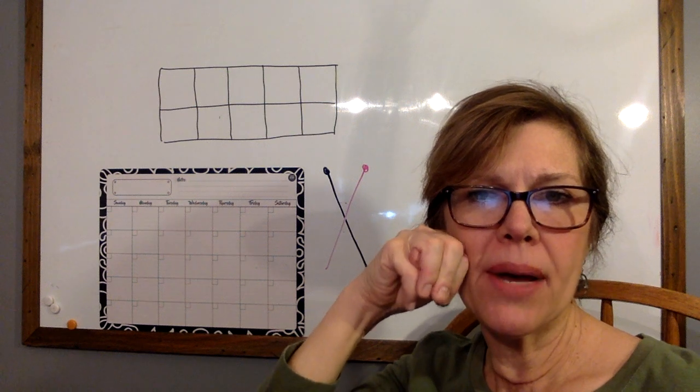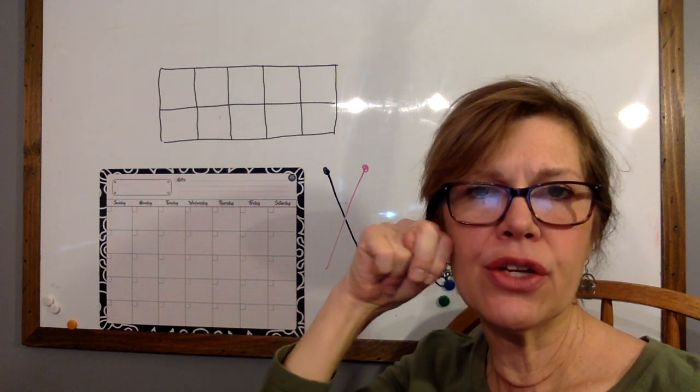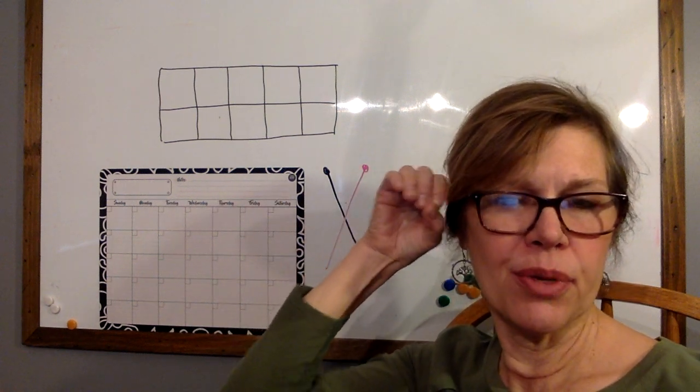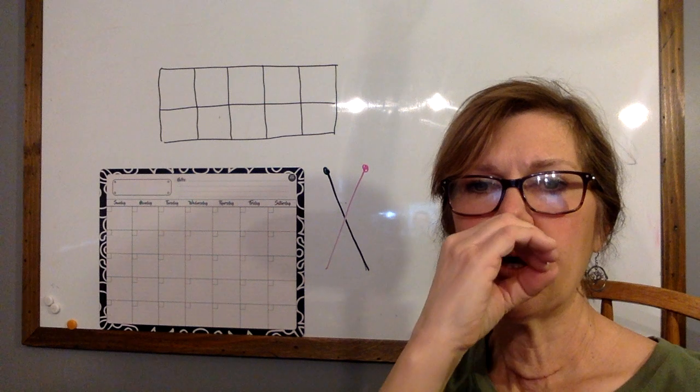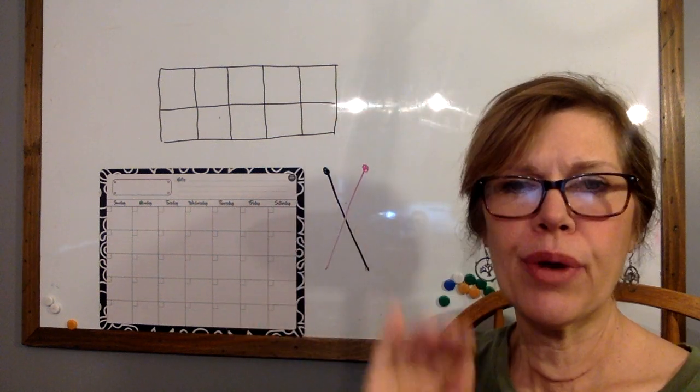M says muh, muh, monkey. N says nuh, nuh, nurse. O says ah, ah, octopus. P says p, p, pig. Q says quh, quh, queen. R says ur, ur, rabbit.